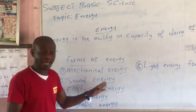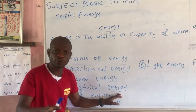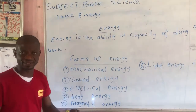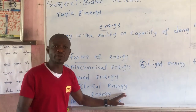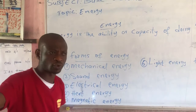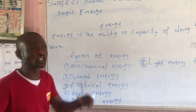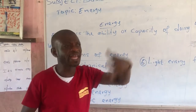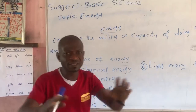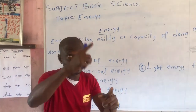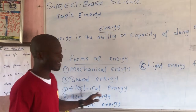The third one is electrical energy, which all of you know as electricity. Electrical energy is energy we get from sources like the Kainji Dam or the Shiroro Dam in Niger State. The light you see in your home is what we call electrical energy.